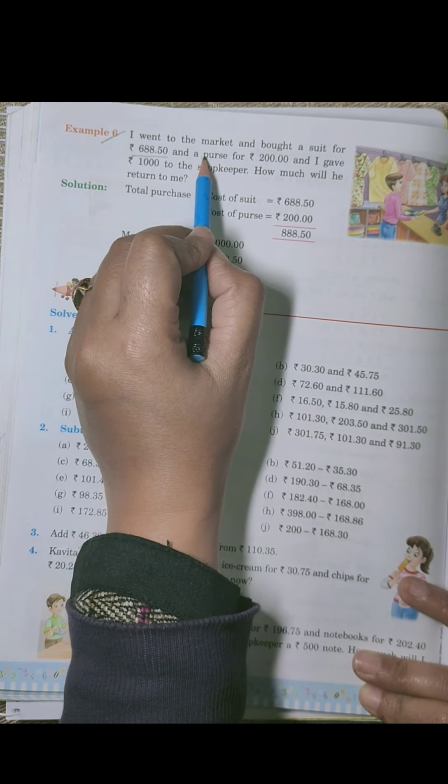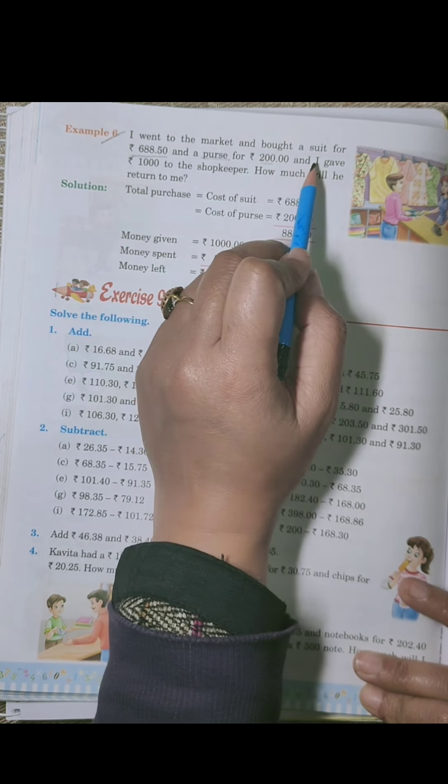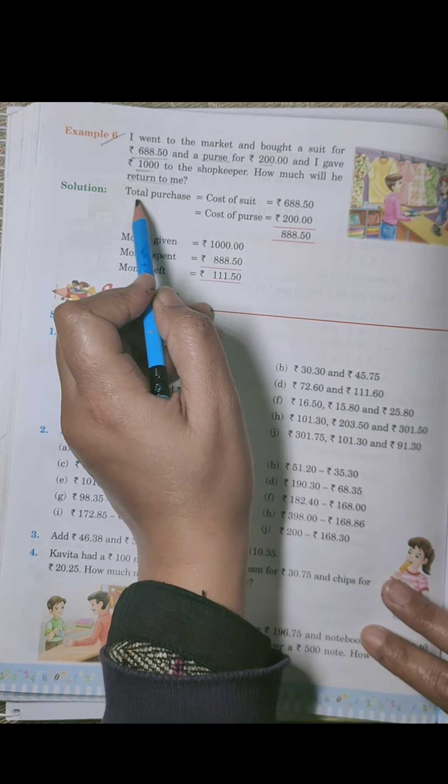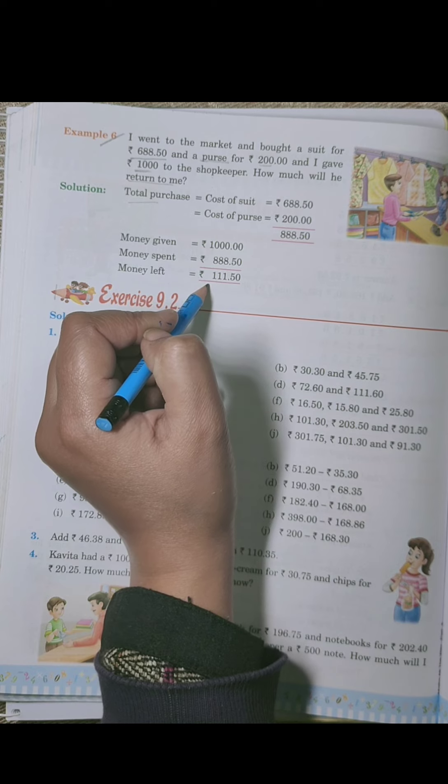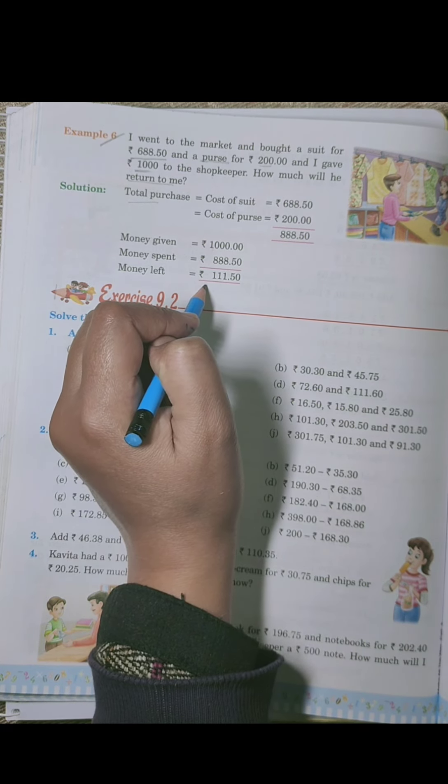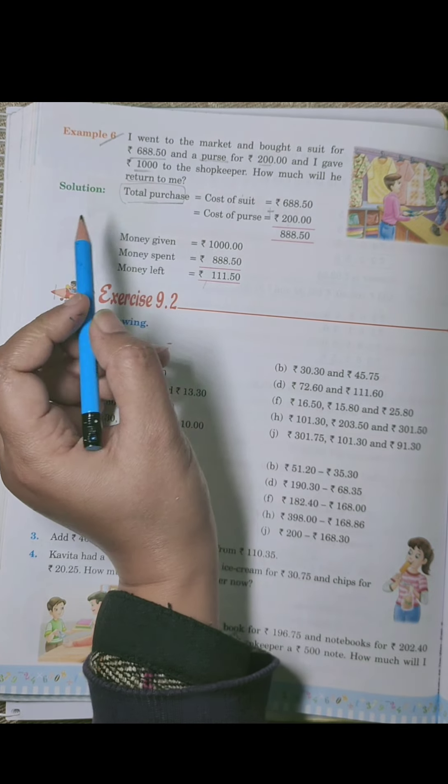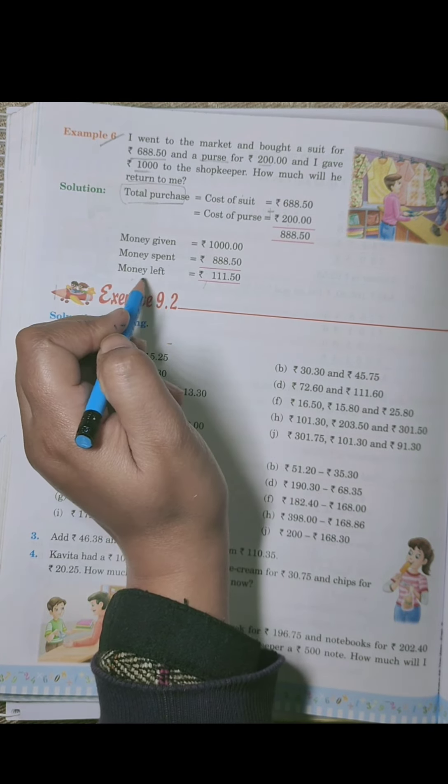Next, the sixth example is: I went to the market and bought a suit for rupees 688.50 and a purse for rupees 200. So I bought these two items: suit and purse. I gave the shopkeeper 1000 rupees. How much will he return to me? So how much will he return? The total purchase was the cost of suit and purse. We will add both, then subtract from the amount I gave, which was 1000. This is the solution of this example. You can try to solve this example yourself. I have explained its method. First, calculate the total cost, which includes the suit and purse cost added together. Then subtract money given and money spent to find money left. And in the end, the shopkeeper will return 111 rupees 50 paise to the customer.